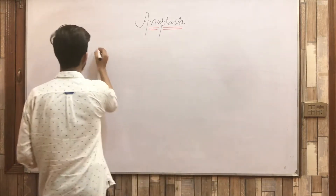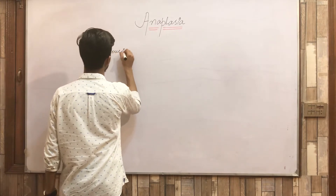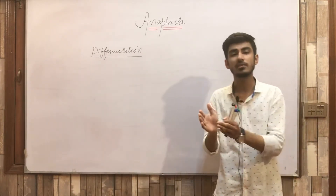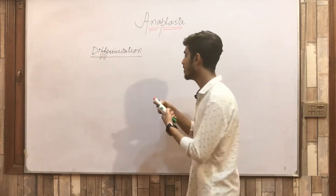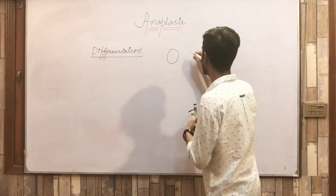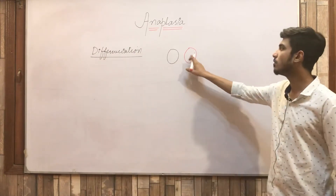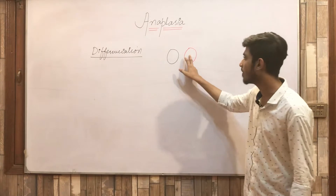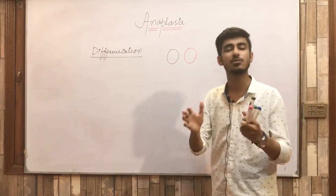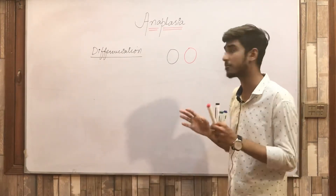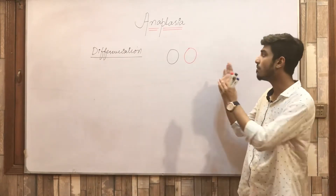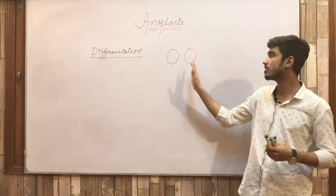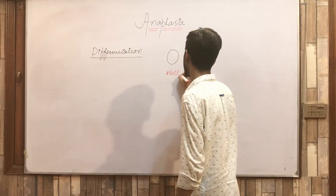Differentiation is basically the extent to which the tumor cell resembles the normal cell, functionally as well as morphologically. For example, if we have a normal cell and a tumor cell, and we compare them — morphologically both are circular, same size, same shape — and functionally they are also very similar, approximately 95% similar. If the tumor cell resembles the normal cell to a very high degree, like 95%, then we call it well differentiated.